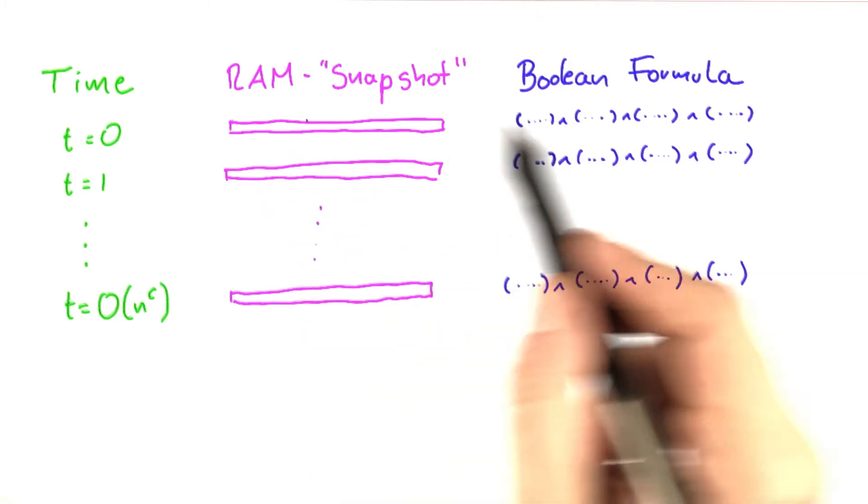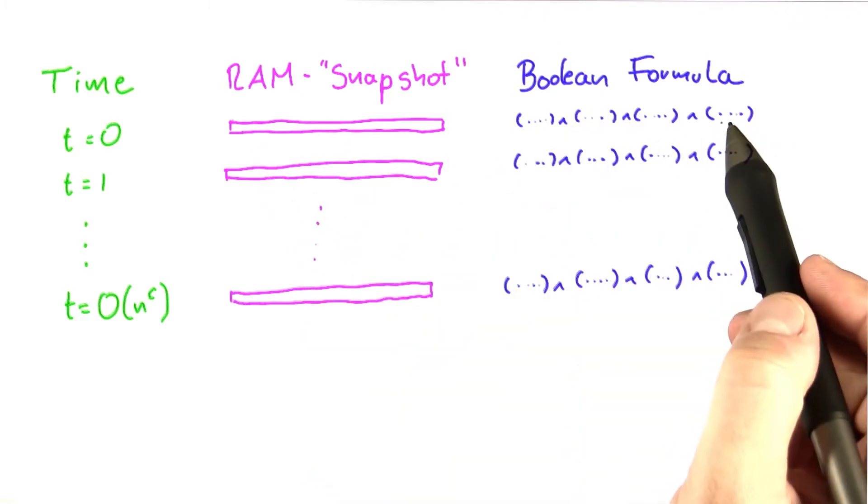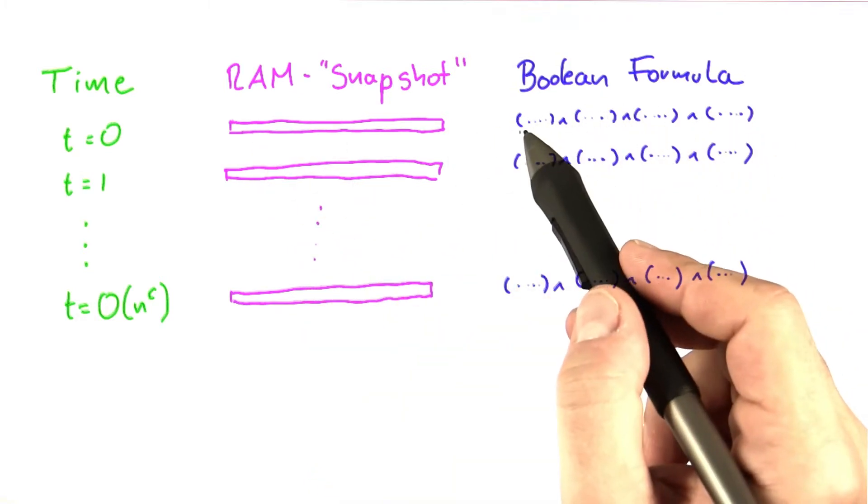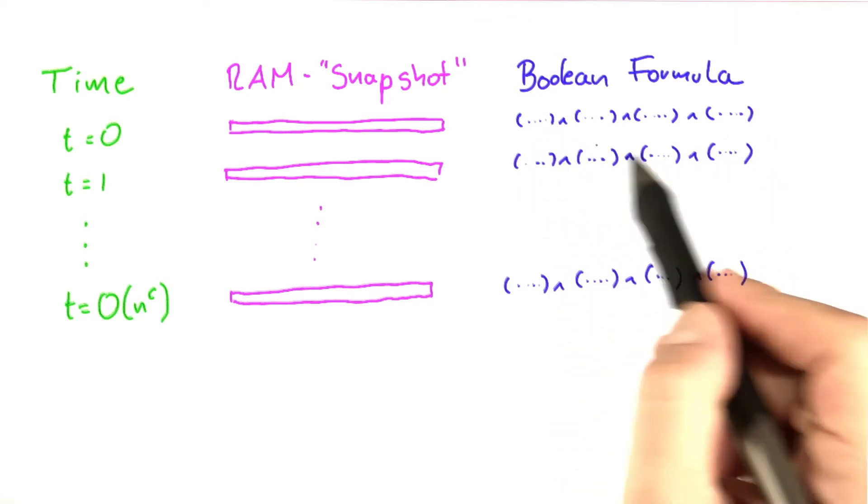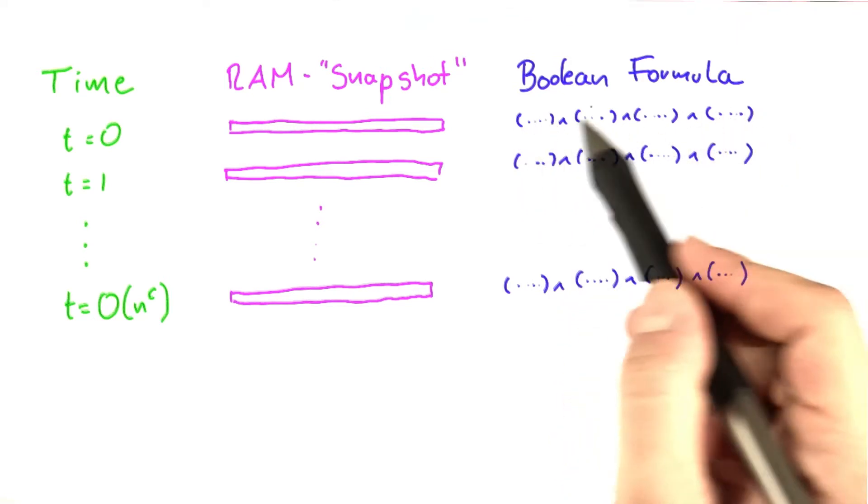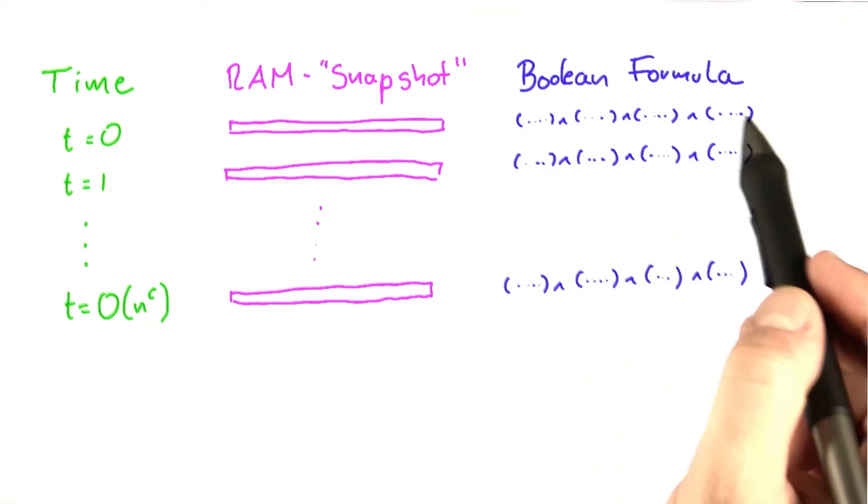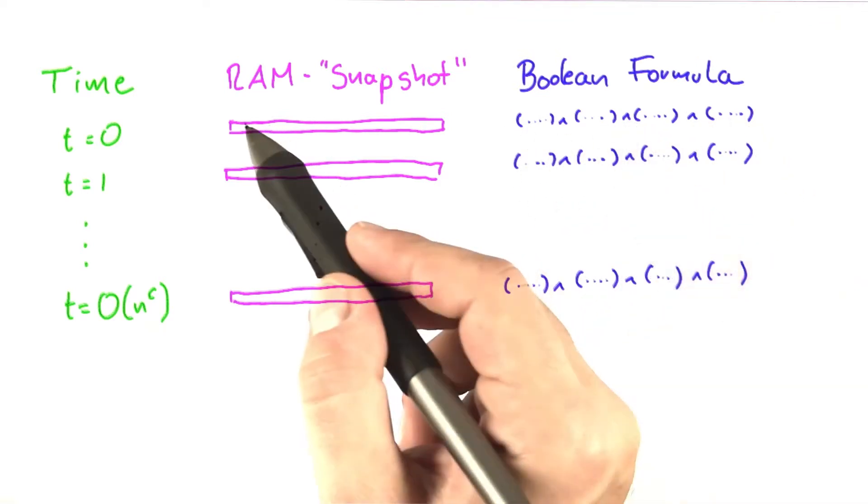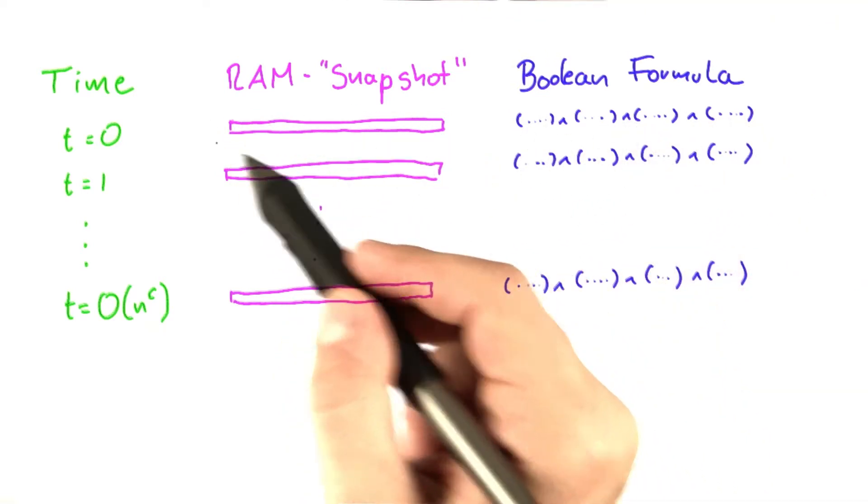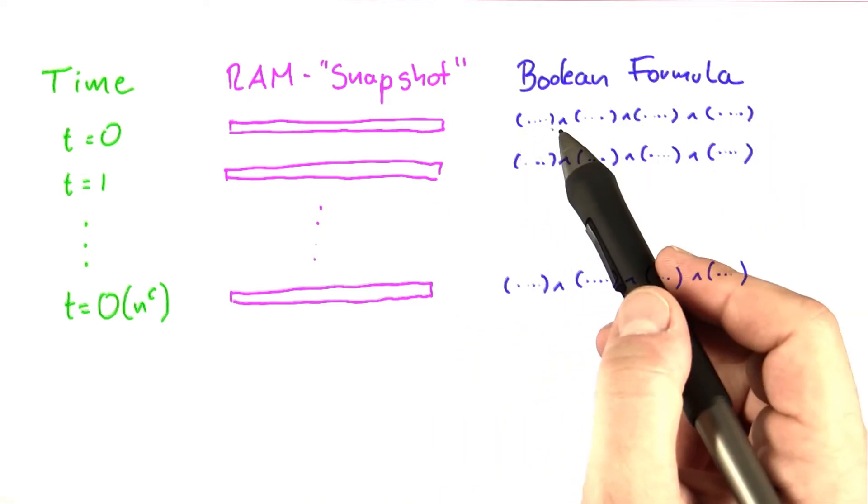And I've now also shown you that we can represent a snapshot as a Boolean formula. What that means is that I've shown you how to construct a Boolean formula, so that when you have a satisfying assignment for this Boolean formula, and there can be many, then you can reconstruct this snapshot from the satisfying assignment.